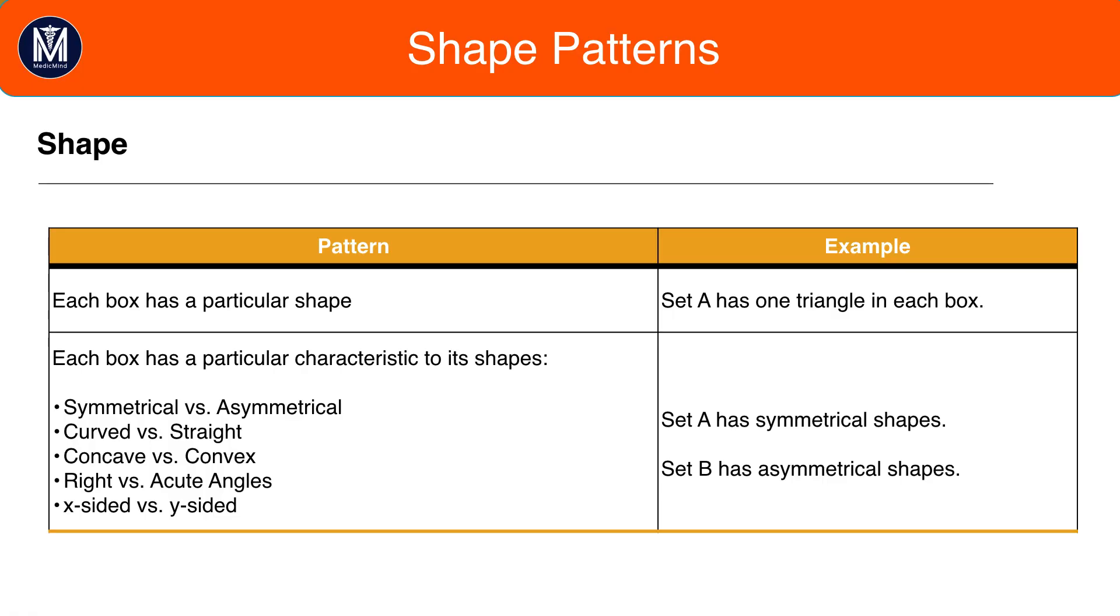Shape patterns are to do with the particular types of shapes you see. A common pattern is for each box to have a particular shape. For example, set A has a triangle in every box.